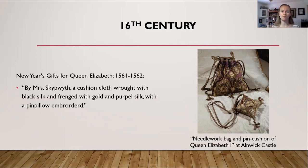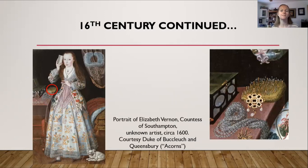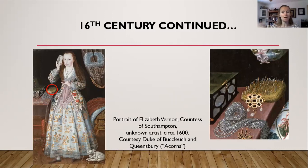On the right side is a picture of a needlework bag and a pin cushion presumed to have belonged to Queen Elizabeth the First — the larger drawstring bag is the needlework bag, and the little square on the cord is the pin cushion. Here is a painting from 1600: on the right, zoomed in to the table, you can see pearls, a brooch, and just above the brooch a large rectangular pin pillow with a whole bunch of pins sticking straight up. This is a portrait of Elizabeth Vernon, Countess of Southampton.